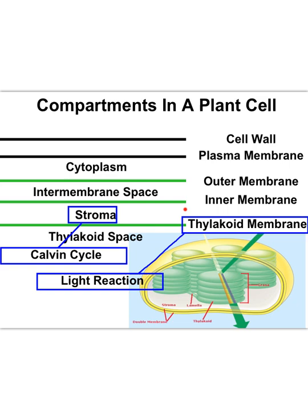The places we'll really be focusing on are the thylakoid membrane — which contains the enzymes that support the light-dependent reactions of photosynthesis — and the stroma, which has all of the parts needed for the second phase of photosynthesis called the Calvin cycle.